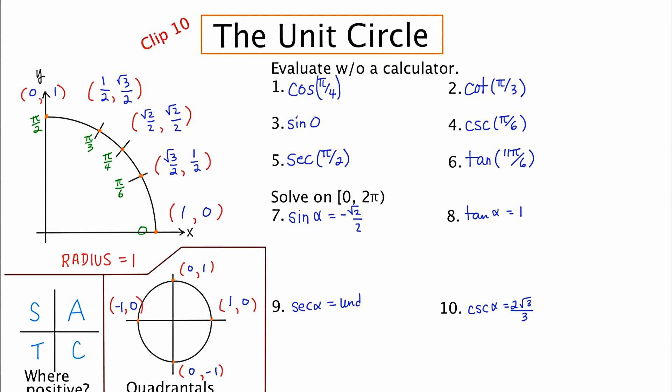So here we go. Let's do some of these problems. Cosine, the ratio for cosine is X over R. Now we know that R is one, so that's the unit circle's radius. And X, the X coordinate at that position, is root two over two. So what we really have is root two over two over one. So the answer is just root two over two.